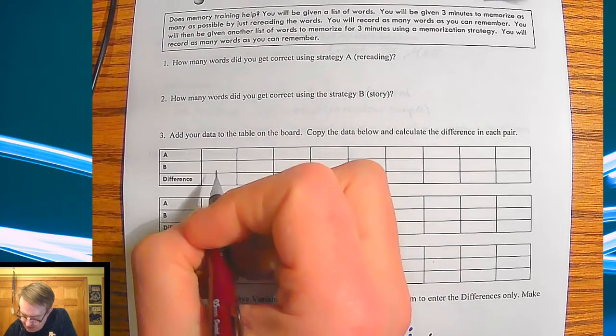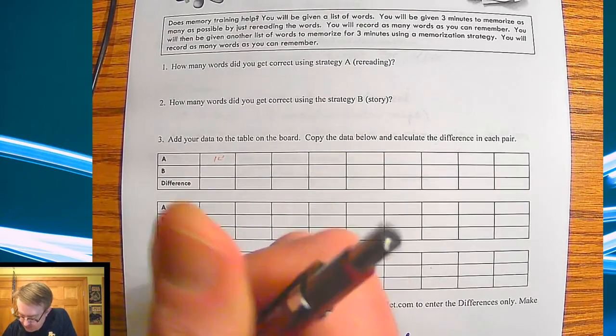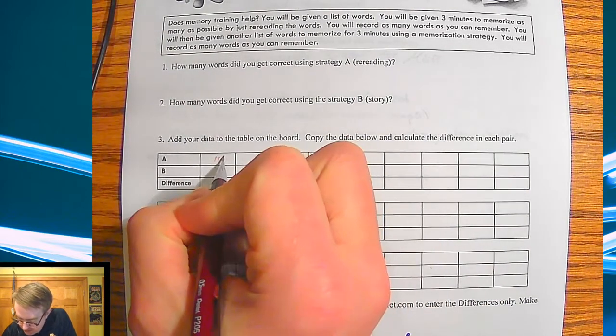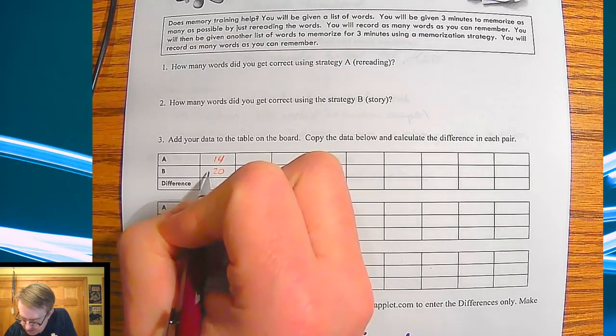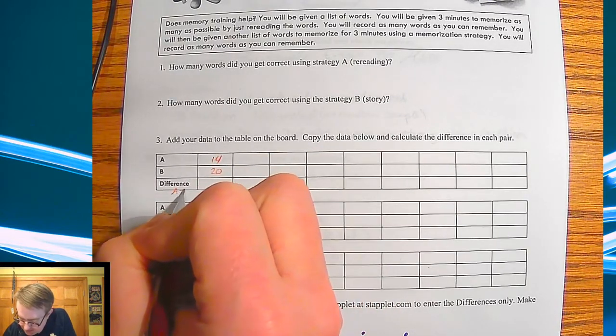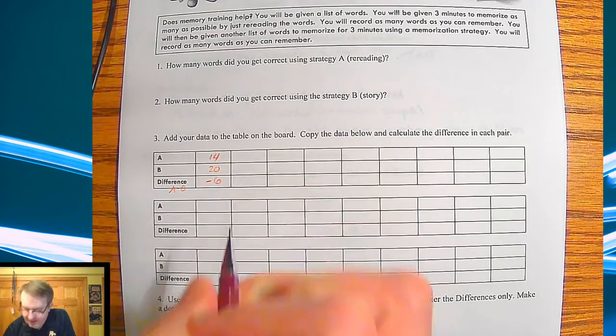You had three minutes for each list, and then you'd write down as many words as you remembered on a sheet of paper, and we'd count those all up. Now, as you can see here, I don't have the data because obviously this is what you'd go through and do. So for example, maybe you had 14 words on strategy A, and then maybe I had 20 words here. So then I was going to subtract this A minus B, I would come up with negative six.